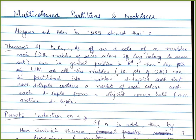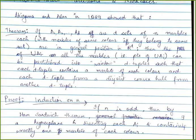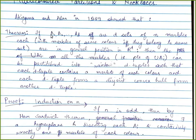In 1989, Akiyama and Alon showed that if you have sets A_i of n marbles each, where each marble has a different color — all marbles of set A_i look alike, all marbles of A_2 are alike but different from A_1, and so on — and they are placed in general position in R^d, then all the marbles collectively can be partitioned into rainbow D-tuples, such that each element of the tuple comes from a distinct A_i and each entry is non-zero.